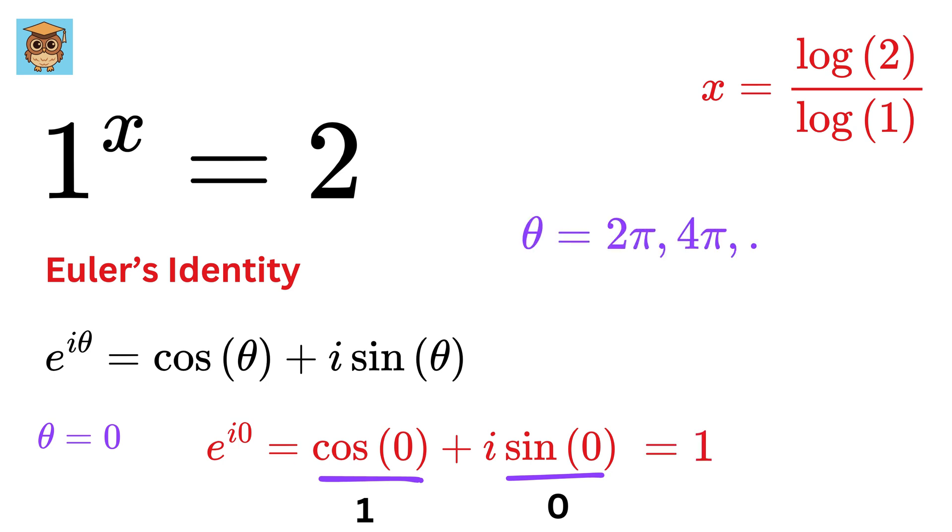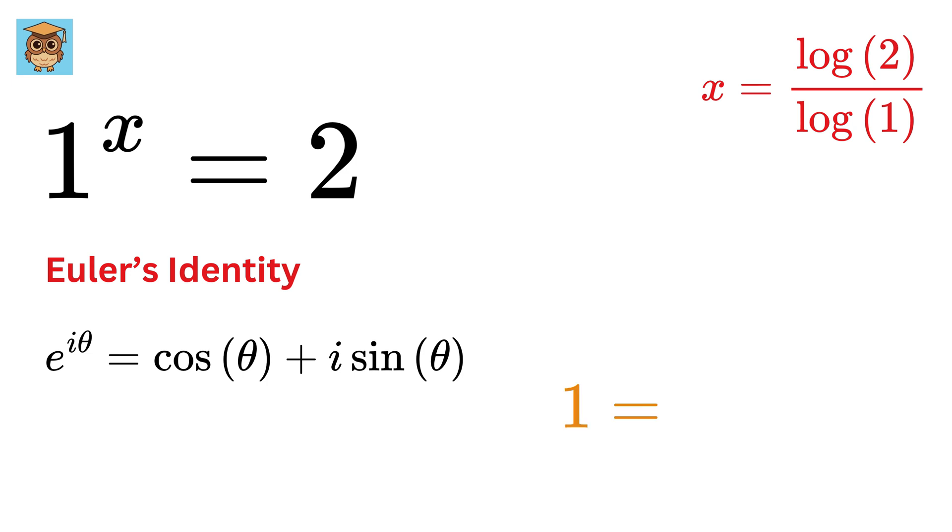But this also works for theta equals 2 pi, 4 pi, and so on. So 1 in complex world can be written as e raised to i times 2k pi, where k equals 0, 1, 2, and so on.